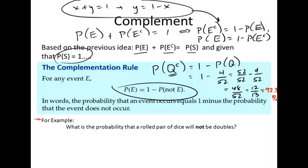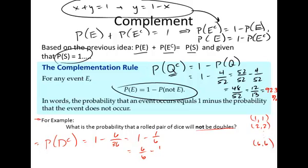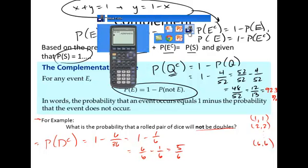So 12 thirteenths. And then if you want to calculate that as a percentage. Let me open up the TI calculator. 12 divided by 13, 92.3%. Another example: What is the probability that a rolled pair of dice will not be doubles? Remember what doubles meant: a 1 and a 1, or a 2 and a 2, all the way down to 6 and 6.